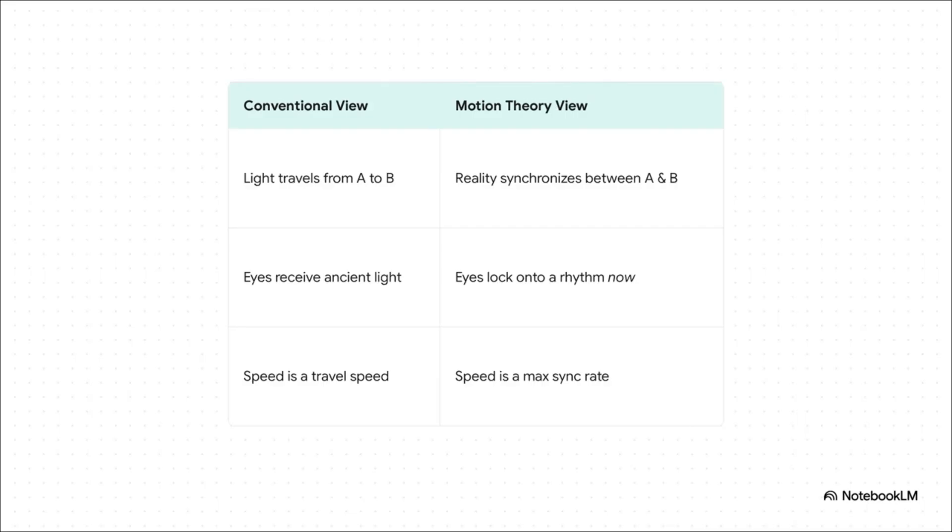Let's break this down, because it's a big one. The conventional view: a photon zips across space from point A to point B. The Motion Theory view: reality itself synchronizes between A and B. So you're not seeing ancient light—your eye is literally locking onto the rhythm of that distant star in the here and now. So the speed of light? It's not a travel speed. It's the maximum sync rate of the universe. It's how fast any two points in this cosmic web can get in tune with each other.